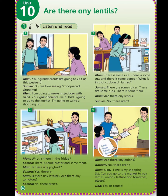Vocabularies: any — أي، lentils — عدس، shopping list — قائمة التسوق، some — بعض، rice — أرز، salt — ملح، pepper — فلفل، cupboard — خزانة، nuts — مكسرات، flour — طحين، fridge — ثلاجة، butter — زبدة، meat — لحمة، yogurt — لبن، lettuce — خس، onions — بصل.